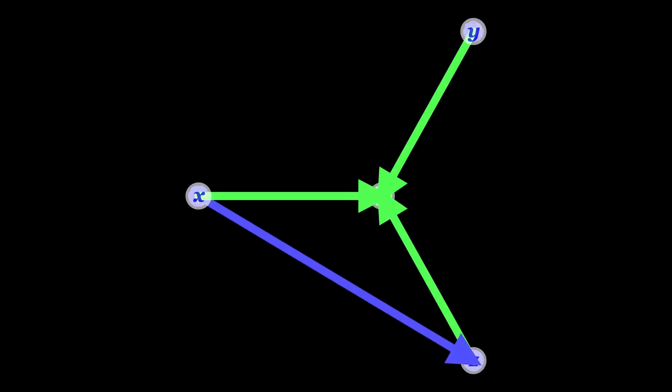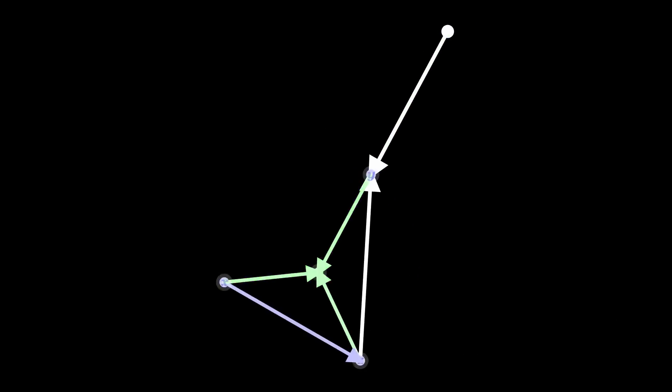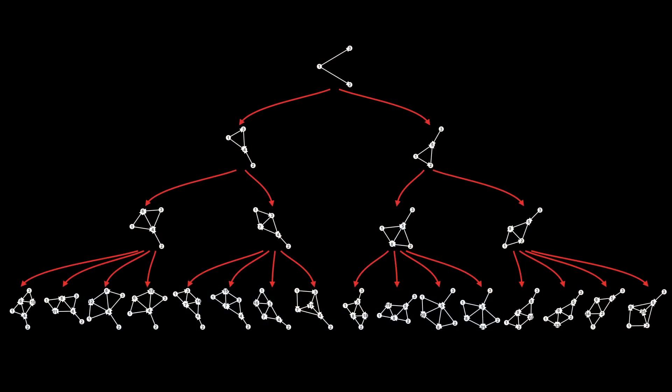In earlier episodes, I have talked about these events. They're the computations, the applications of rules that turn one hypergraph into another hypergraph. But I haven't shown these events. On the multiway graph, I've drawn the hypergraphs and the red arrows that represent the transitions from one hypergraph into another hypergraph, but I haven't shown the events in which these transitions happen. So let's do that — let's show the events.